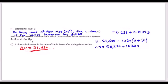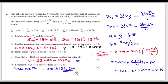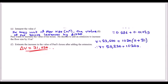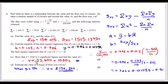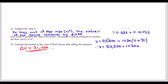Paul adds an extension increasing floor size by 31 m², so replace s with (s + 31) in the equation. Expanding gives 1020s + 1020×31 added to the constant, yielding an additional £31,620. Comparing the new equation to the original, the increase in house value is 1020 × 31 = £31,620.